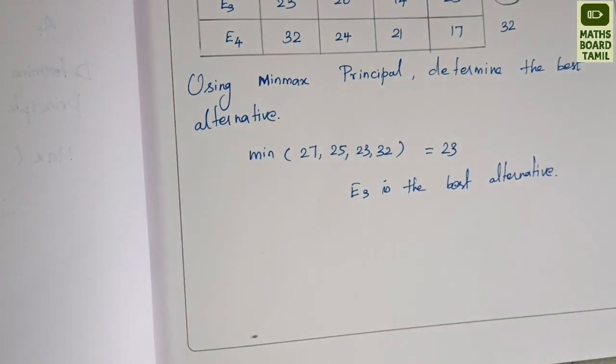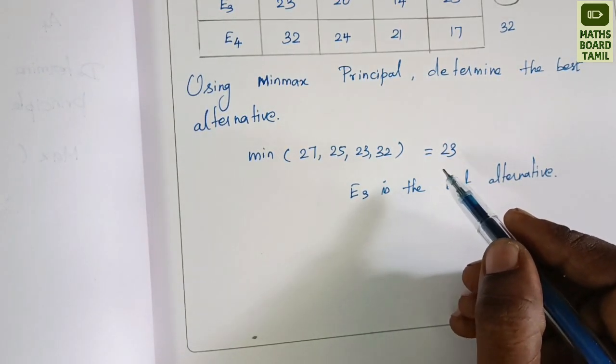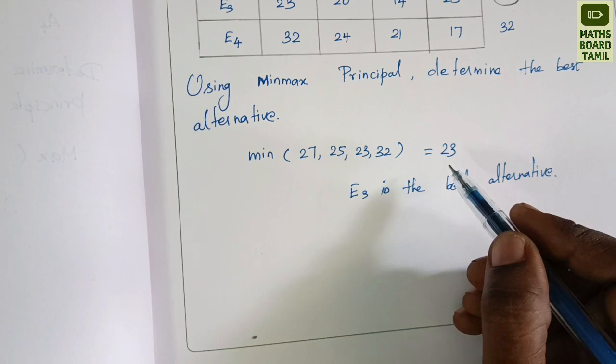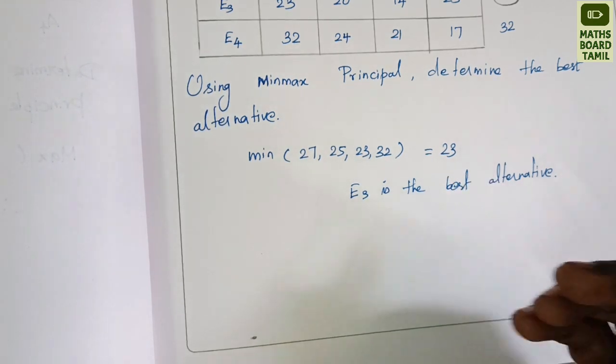Using the Minimax principle, we find the best alternative with minimum cost of 23. Please share this video and subscribe to our channel. Thank you.